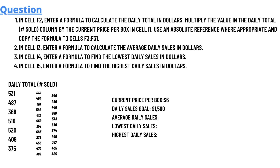In cells I3, I4, and I5, you have to find the average, lowest, and highest daily sales in dollars. The daily total sold units given in the sheet start from 531, 487, 366, and due to less space, other unit solds are listed right below: 441, 404, 346, and 42. What we have to find is the average daily sales, lowest daily sales, and highest daily sales. The current price per box is $6.